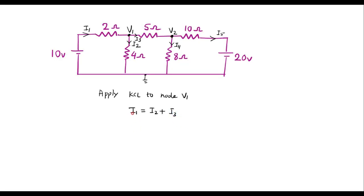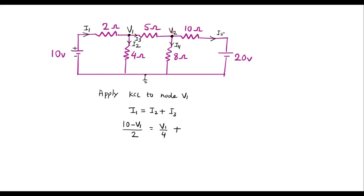We need to express all currents in terms of voltages. I1 is the current flowing from the 10 V source towards V1, so I1 = (10 − V1) / 2. I2 is moving from V1 towards the reference node (0 V), so I2 = V1 / 4. I3 is moving from V1 towards V2, so I3 = (V1 − V2) / 5.